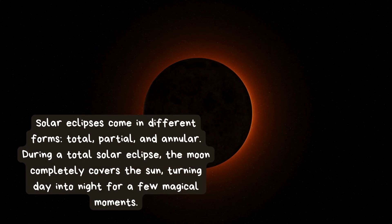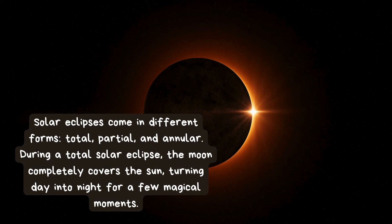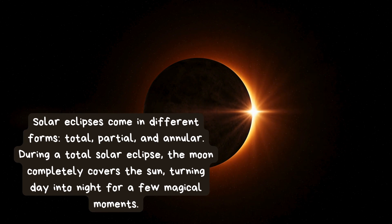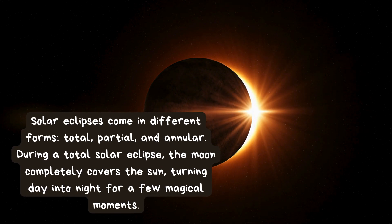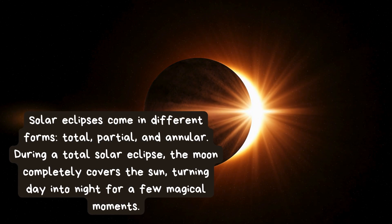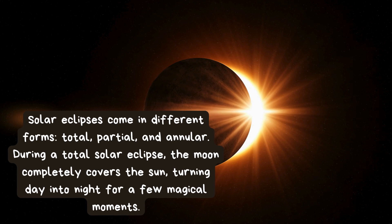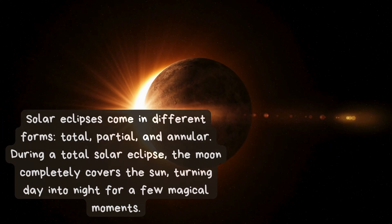Solar eclipses come in different forms: total, partial, and annular. During a total solar eclipse, the moon completely covers the sun, turning day into night for a few magical moments.